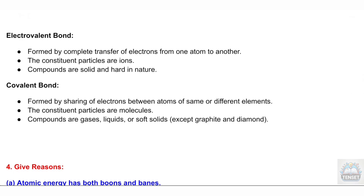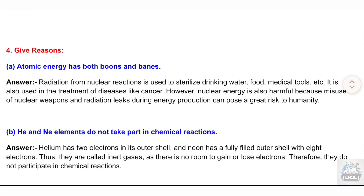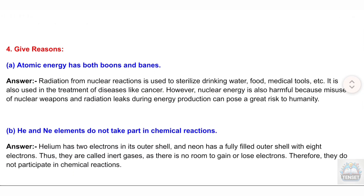Section 4: Give reasons. A. Atomic energy has both boons and banes. Answer: Radiation from nuclear reactions is used to sterilize drinking water, food, and medical tools, and is used in the treatment of diseases like cancer. However, nuclear energy is also harmful because misuse of nuclear weapons and radiation leaks during energy production can pose a great risk to humanity.